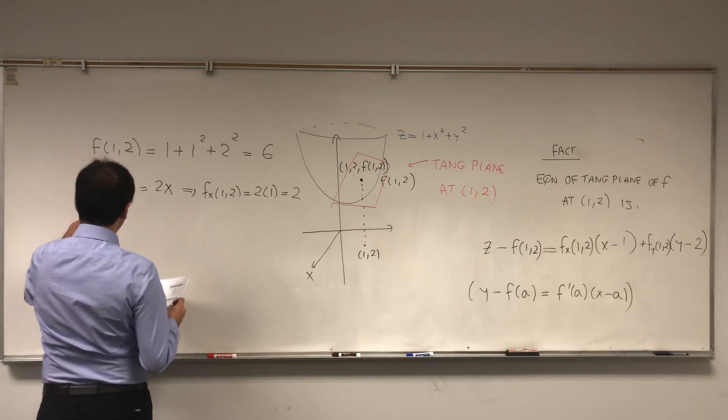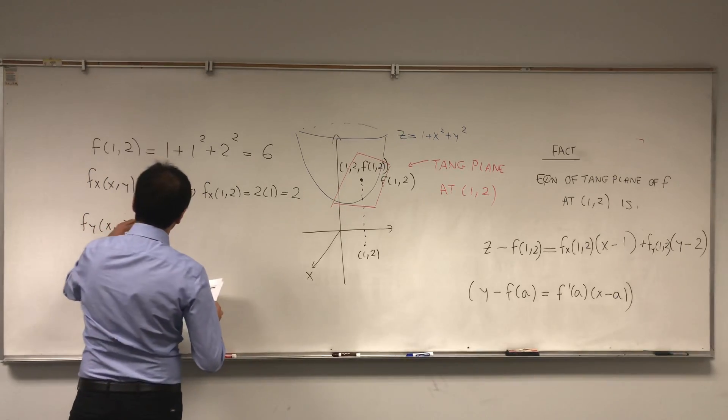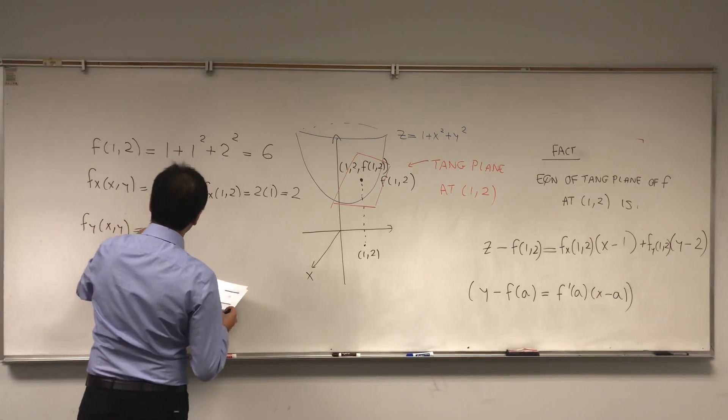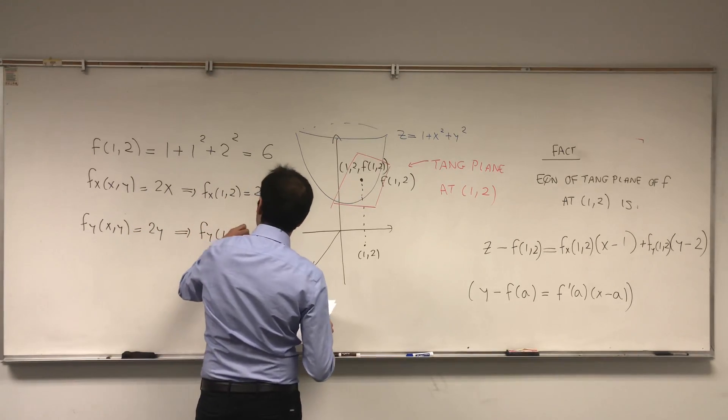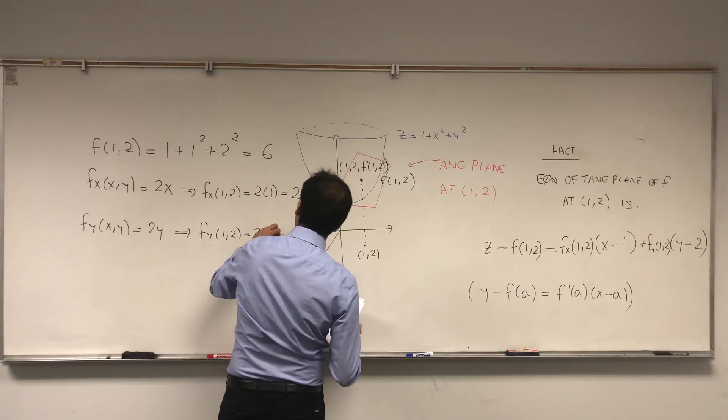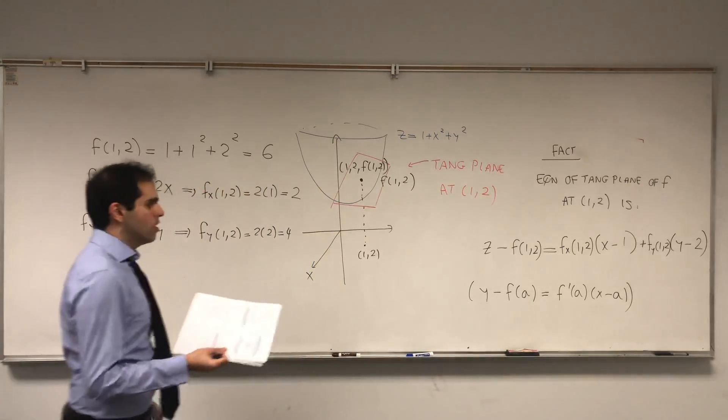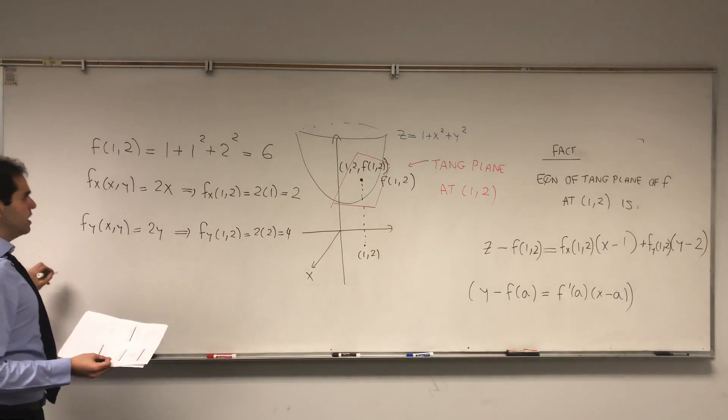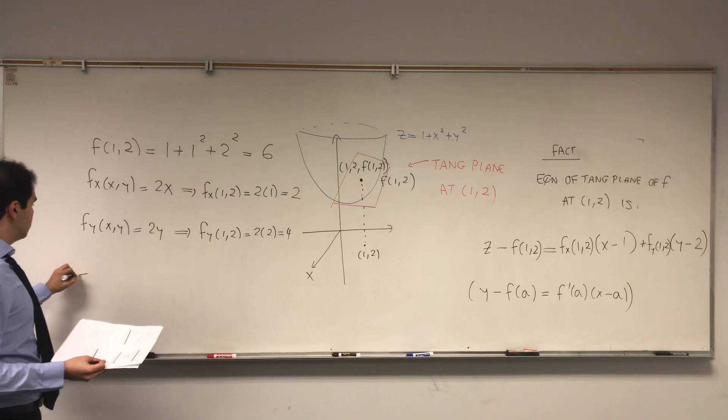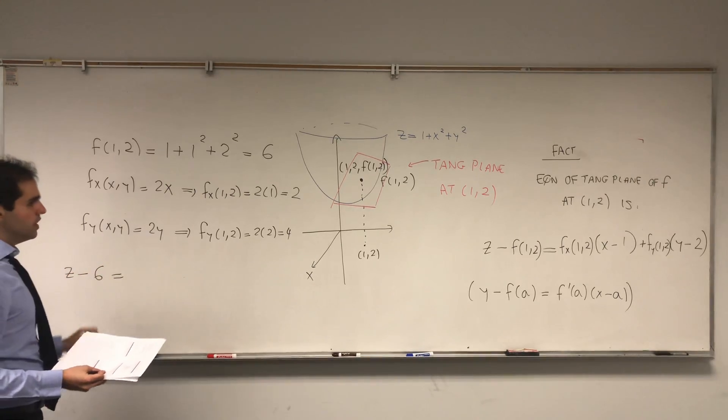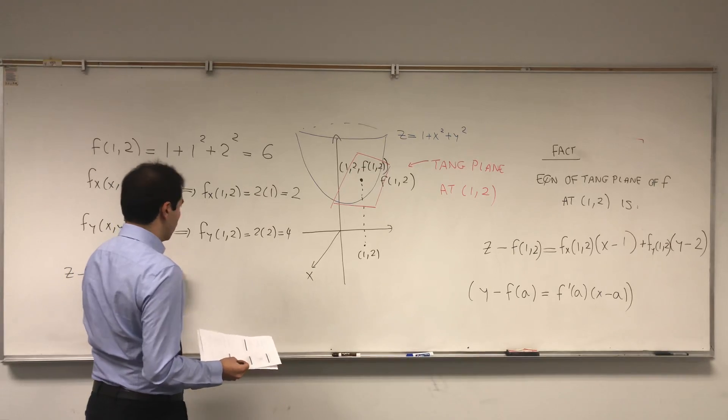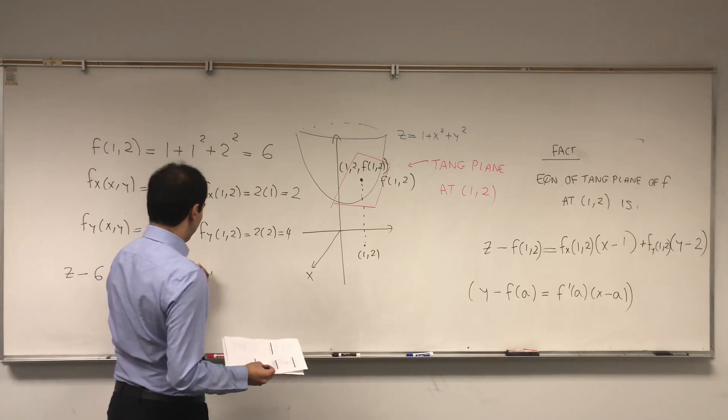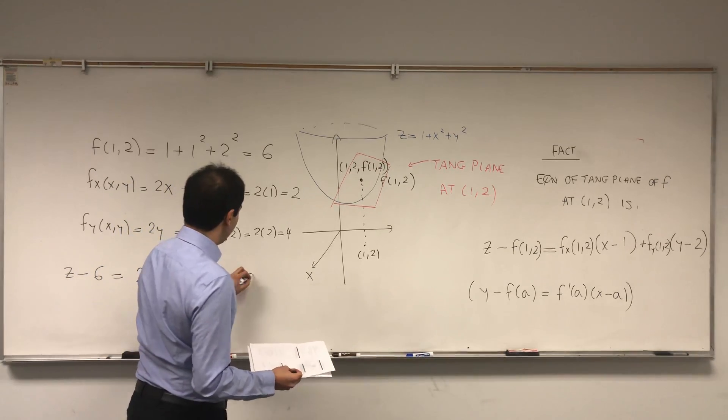And similarly, fy becomes 2y. And so at the point (1,2), it becomes 2 times 2, which is 4. So ultimately, what the equation becomes is z - 6 = 2(x - 1) + 4(y - 2).